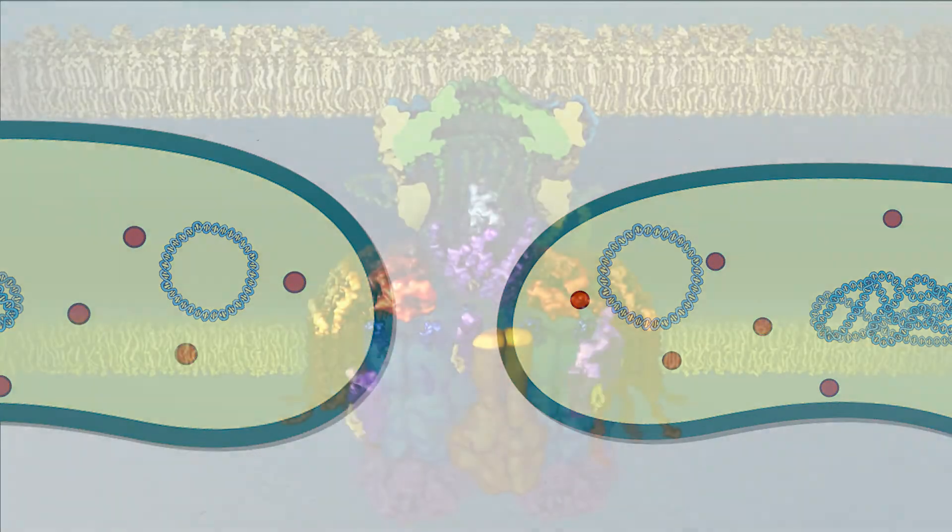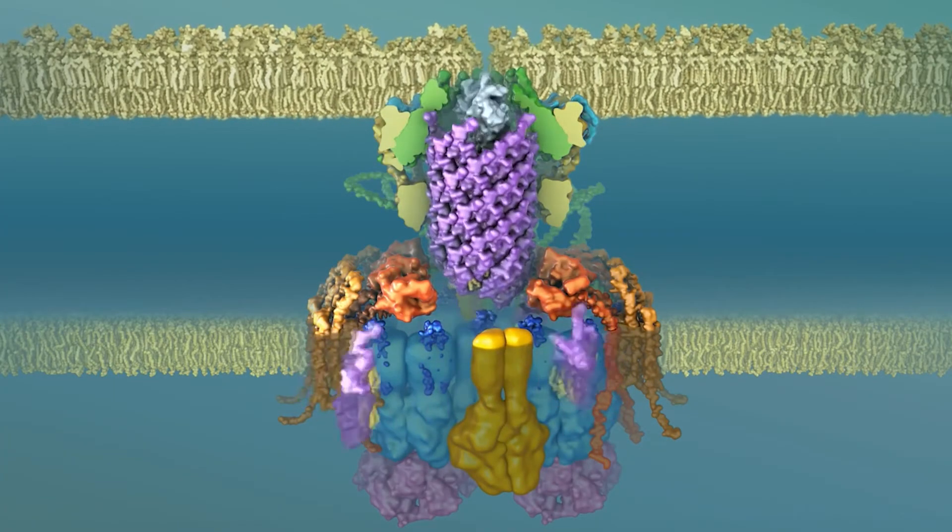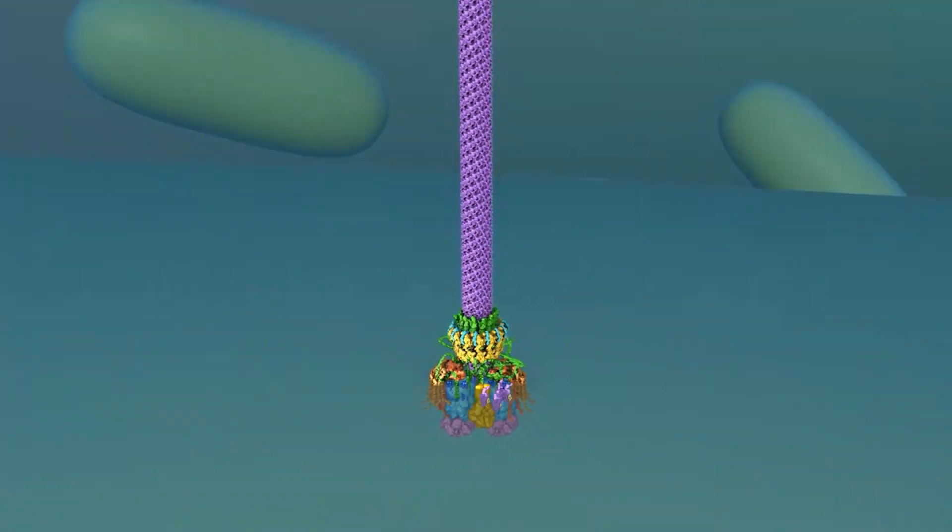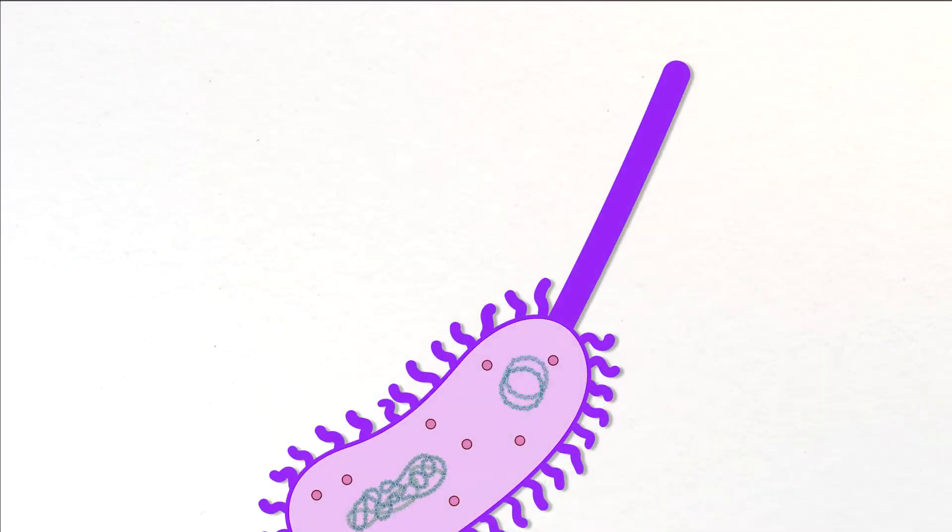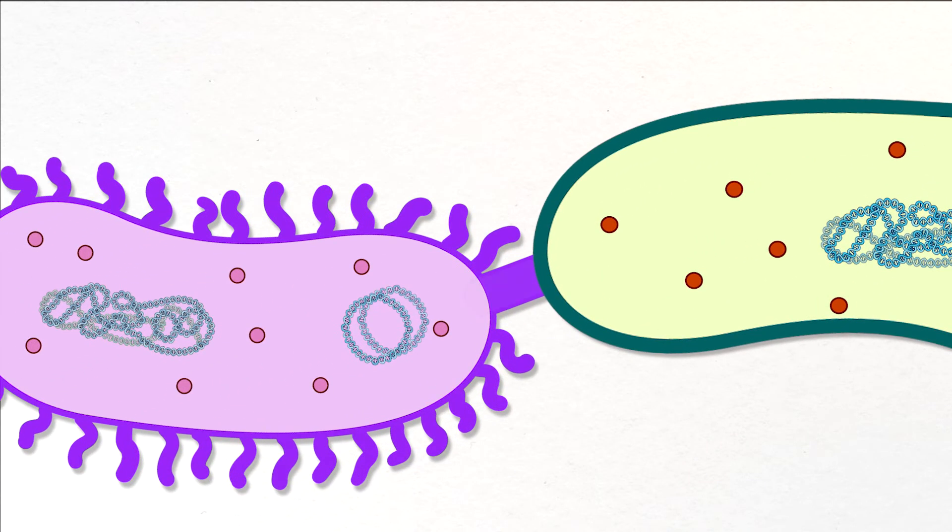They also sometimes provide instructions for bacteria to create long, hollow, hair-like structures that emerge from the cell's outer membrane. These pili can attach to another bacterium and draw it in closer, establishing a cytoplasmic bridge between them.